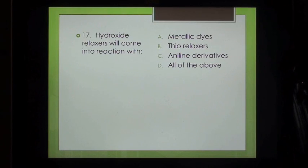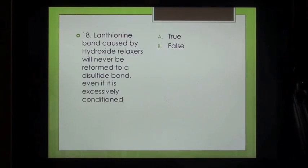Question 17: Hydroxide relaxers will come into reaction with: A. Metallic dyes, B. Thio relaxers, C. Aniline derivatives, D. All of the above.